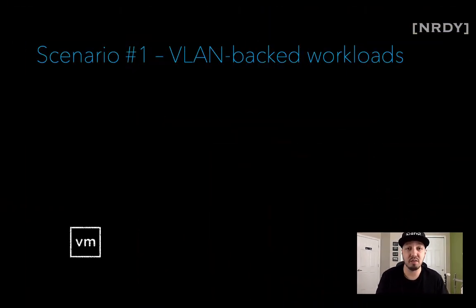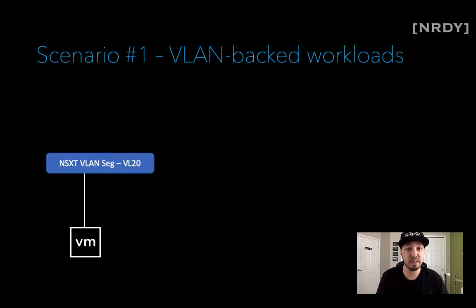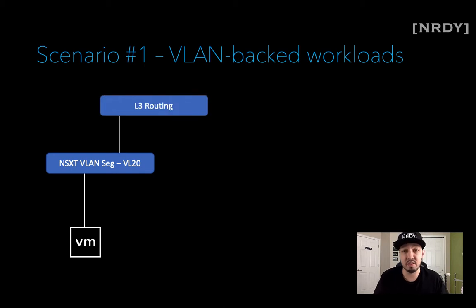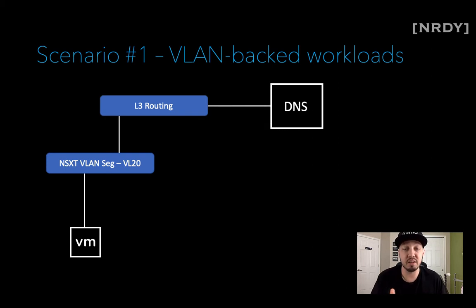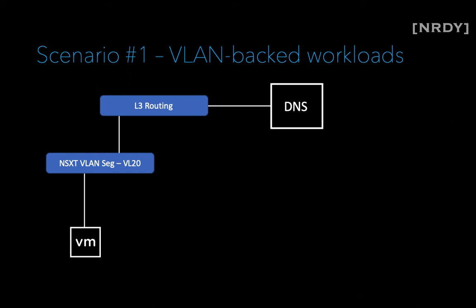There are a few scenarios I'm going to walk you through. The first one is you're doing VLAN backed workloads — where we have a VM connected to an NSX-T VLAN backed segment, in this case on VLAN 20, and that host is connected to a physical network with a DNS server on it somewhere. In this scenario, there's no specific configuration required from an NSX-T standpoint. This will just work out of the box. You just need to make sure the VM has the proper DNS IP and that you can route to the DNS server and back. That scenario is pretty cut and dry.